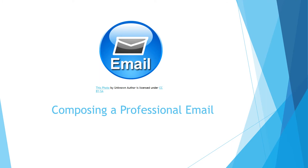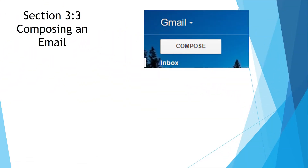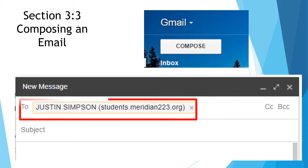Composing a professional email. To create an email, you're going to click on the compose icon right above the inbox. When the new message box opens, you will click inside the To field and then begin to type in the person's name. Just like in Google Drive when you share, if the person you are typing in is listed among your contacts, you will get a listing and all you have to do is click on the person's name to put in the email.